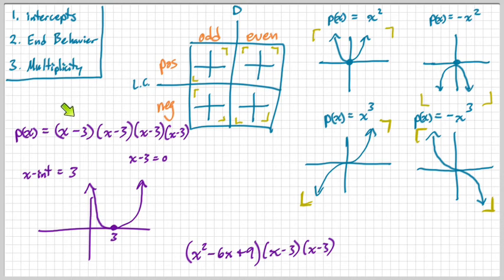So whenever the multiplicity is even, bounce. This guy means this. Even equals bounce. Such a mathematical term, huh? Odd means through.